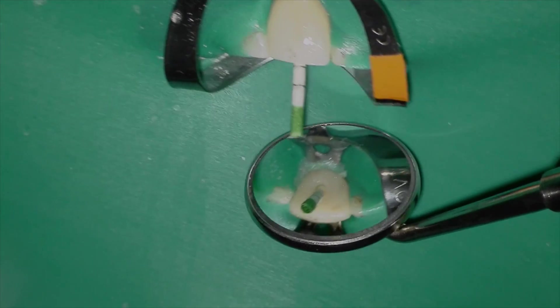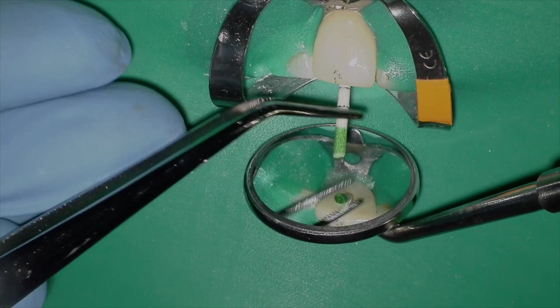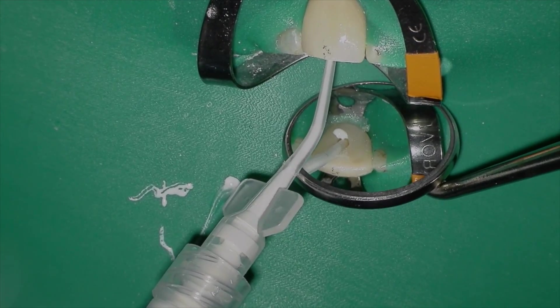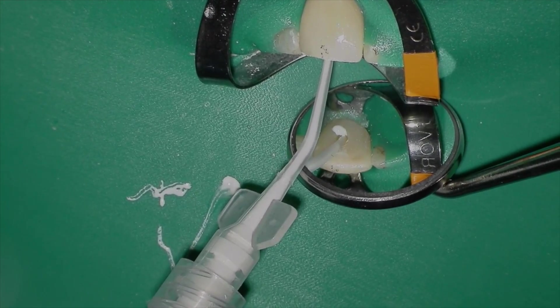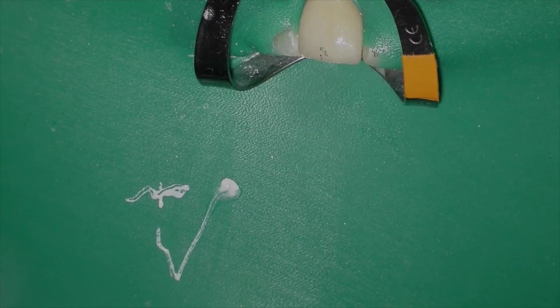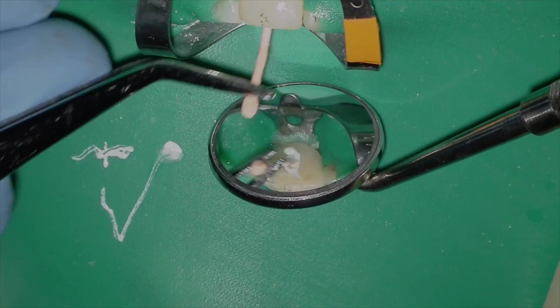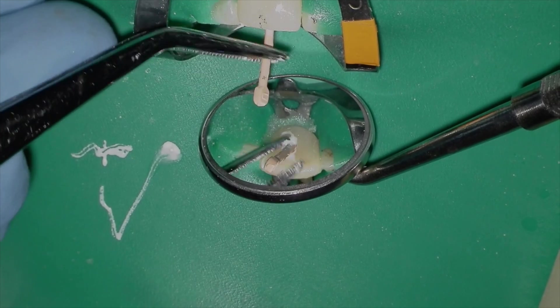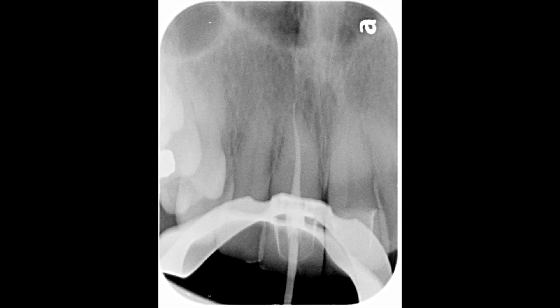I'm going to dry the canal with our paper points and then place a BC sealer. I love this stuff. It's amazing. I'm going to take my cone coated with some BC sealer as well. So I'm going to pump the cone up and down a few times, and then we're going to take a working length radiograph.